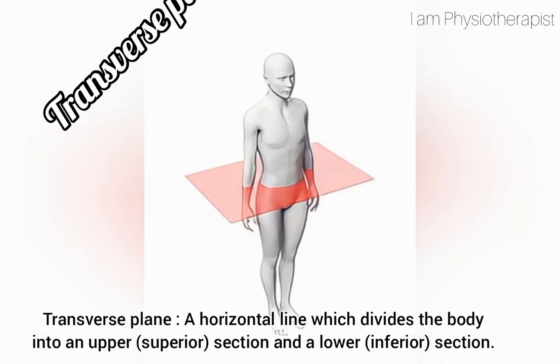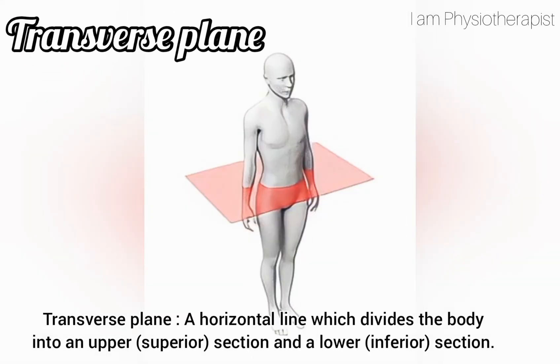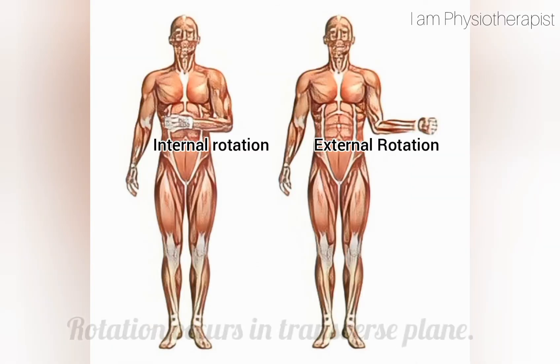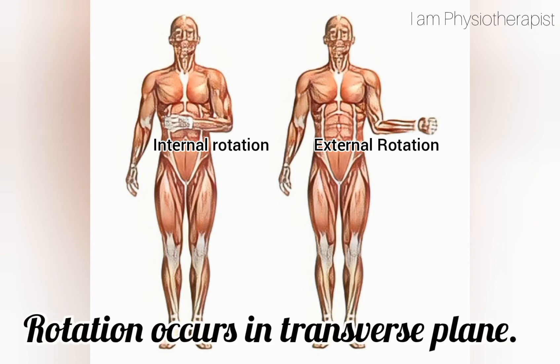Transverse plane: a horizontal line which divides the body into an upper superior section and a lower inferior section. Rotation occurs in the transverse plane.